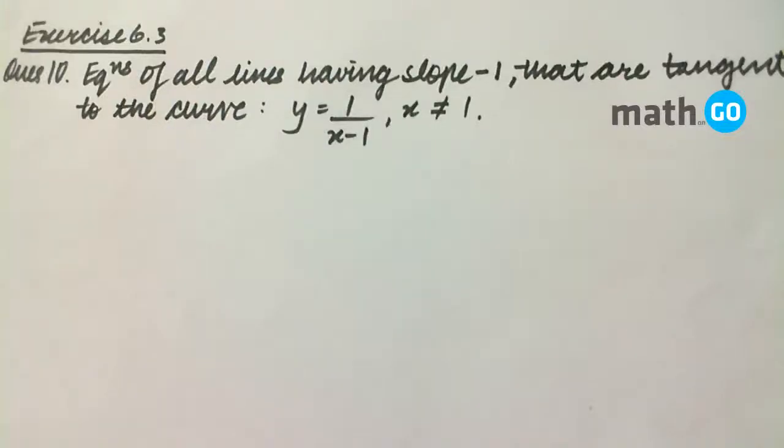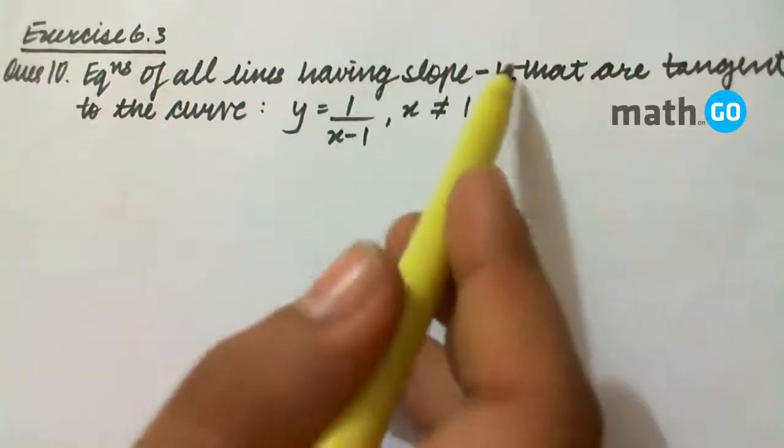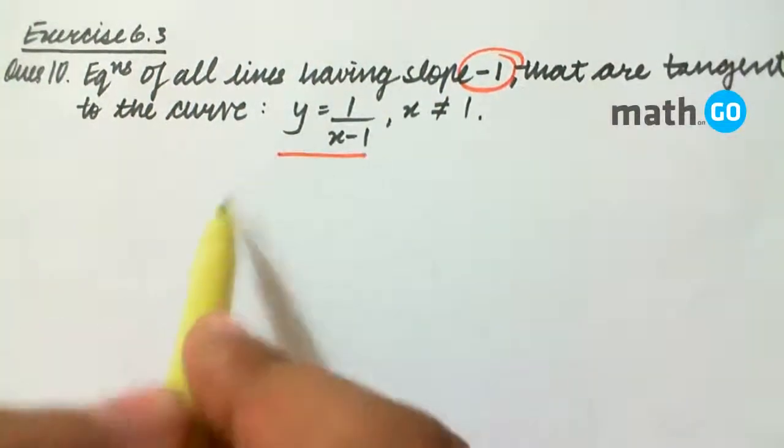Exercise 6.3, question number 10. Find the equations of all lines having slope -1 that are tangent to the curve y = 1/(x-1), x ≠ 1.